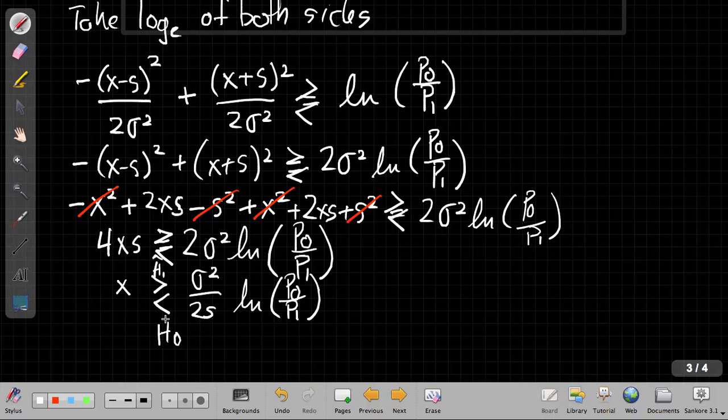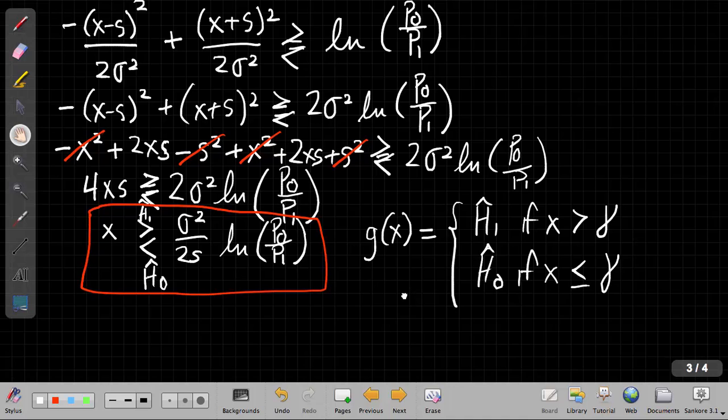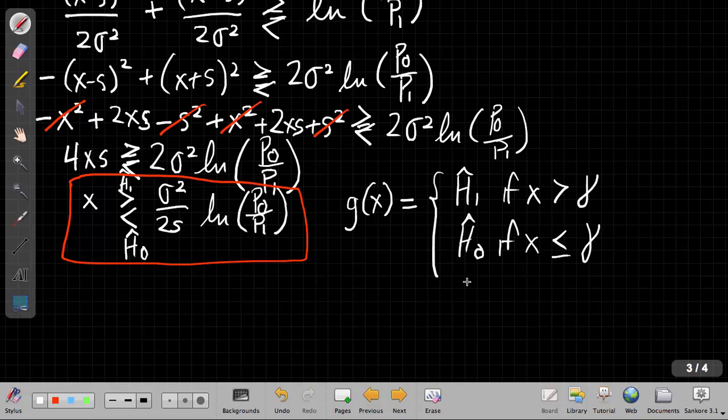All right, so when I'm all done, this box here is my decision rule. Or if you like it, I can write it in a more functional form. I could say that g of x is equal to H1 hat if X is bigger than some threshold, say gamma, and H0 if X is less than or equal to gamma. The equality actually doesn't generally matter for continuous probabilities. Where gamma is that expression I had on the right-hand side there, where I'm using gamma as a shorthand for the threshold which is sigma squared over 2S times the natural log of P0 over P1.